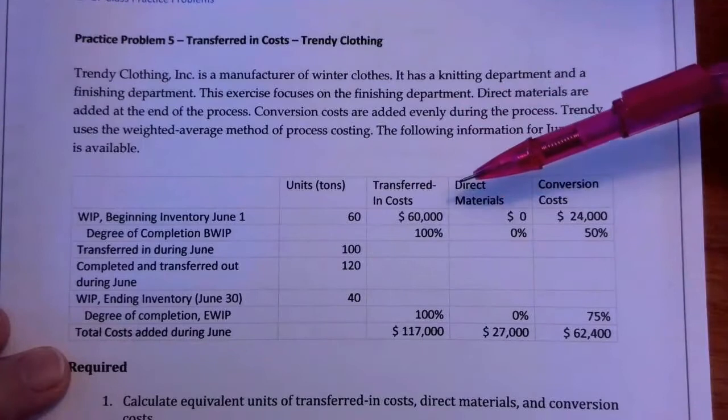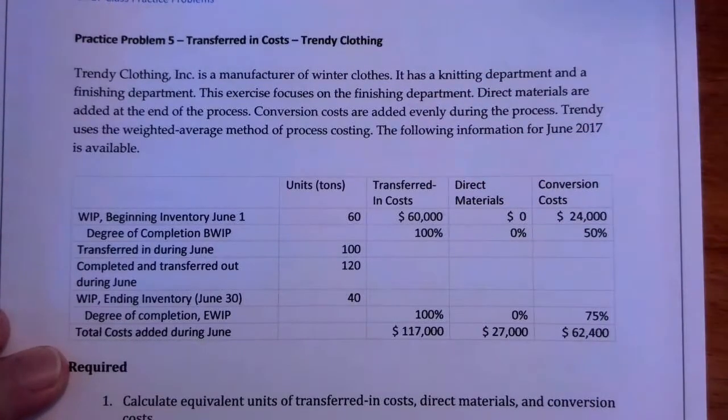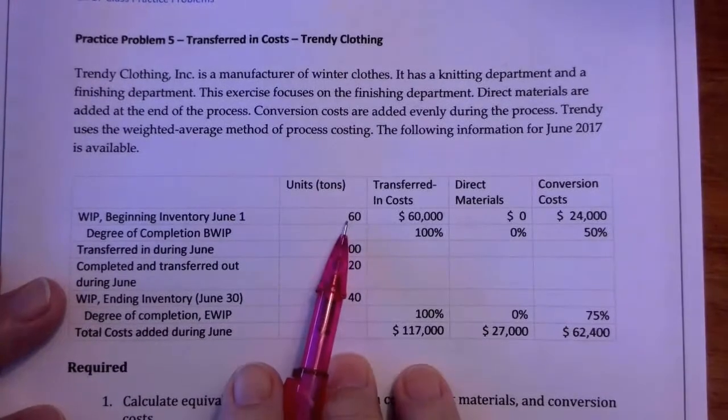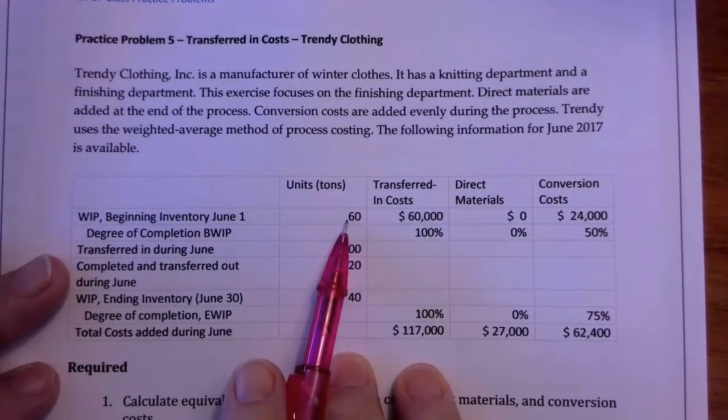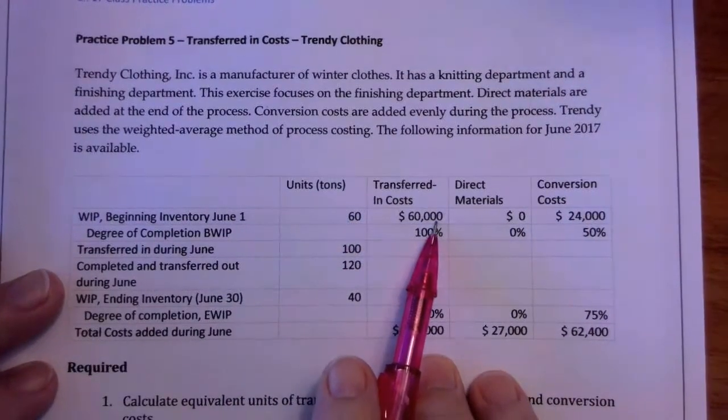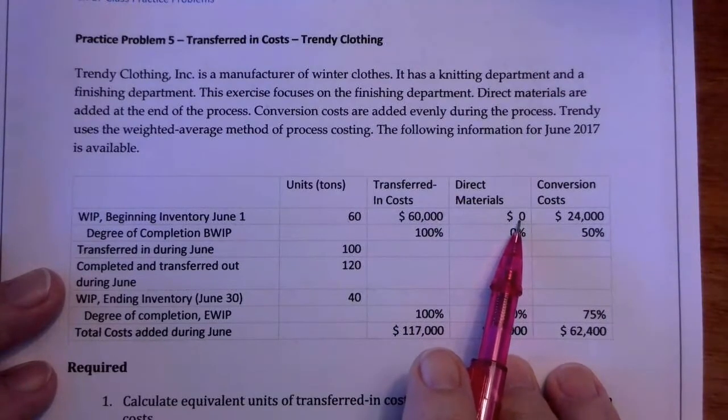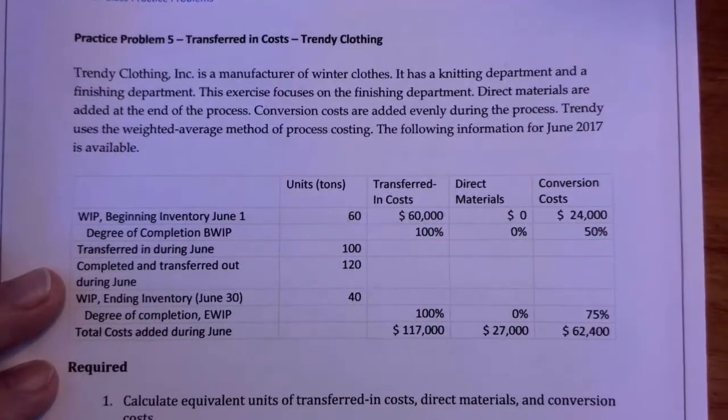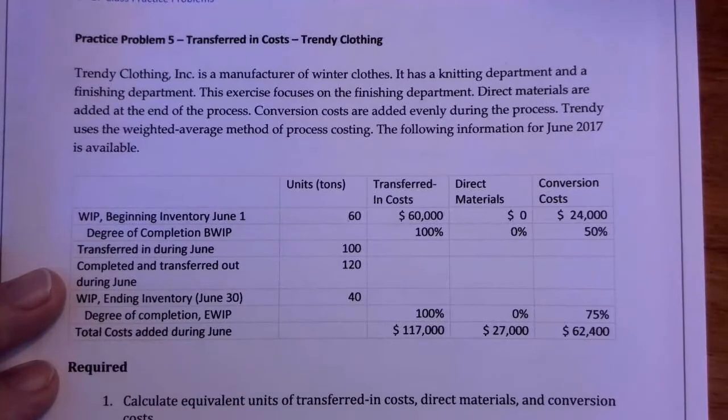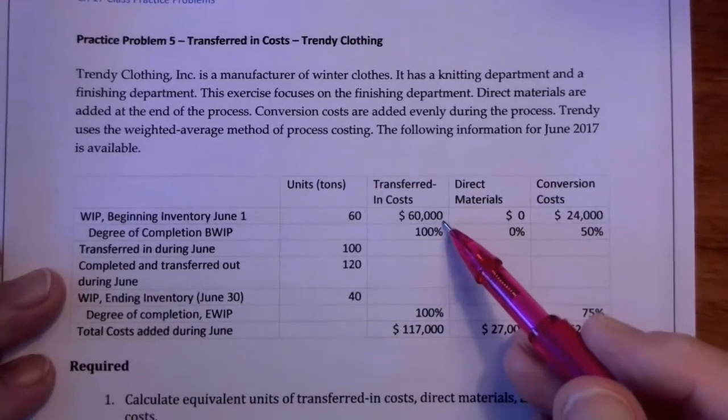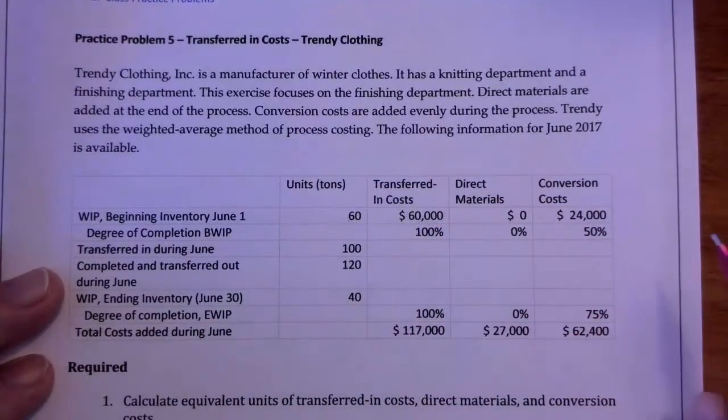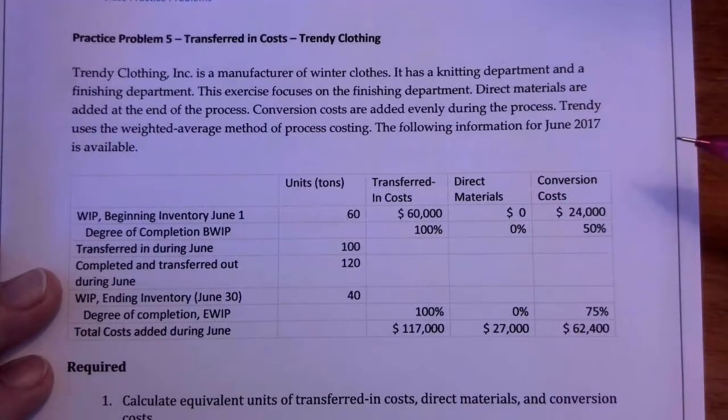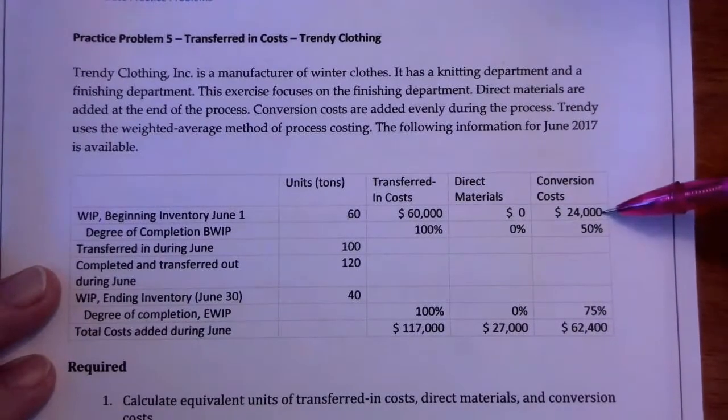Now what you want to picture is this has the knitting department finished and transferred-in costs. It transferred in 100 units. They started out with 60 tons of beginning inventory with transferred-in costs of $60,000, direct materials of zero, because all the direct materials are in this transferred-in costs from the other department. One of the reasons that companies do this is because they keep it by department so that you can actually look at the efficiency in the process that happened within each department. So if you've got a department that has problems, then you can identify it. If everybody's numbers are all smooshed together, then you can't tell.